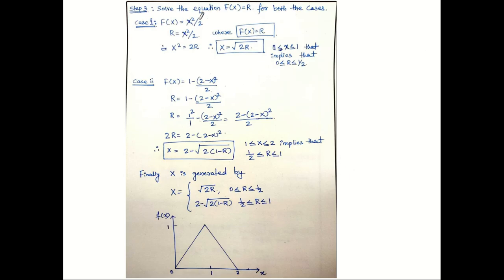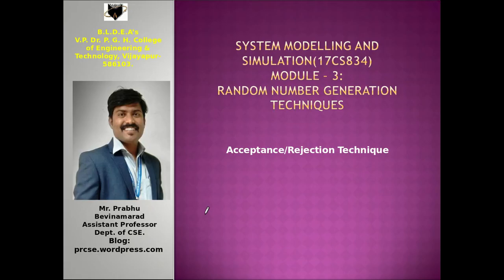For Case 1, F(x) = x² / 2, setting this equal to r gives r = x² / 2, so x² = 2r, and therefore x = √(2r), valid when 0 ≤ x ≤ 1. For Case 2, F(x) = 1 − (2 − x)² / 2, which evaluates to x = 2 − √(2(1 − r)), valid when 1 ≤ x ≤ 2. This completes the inverse transform technique for triangular distribution.